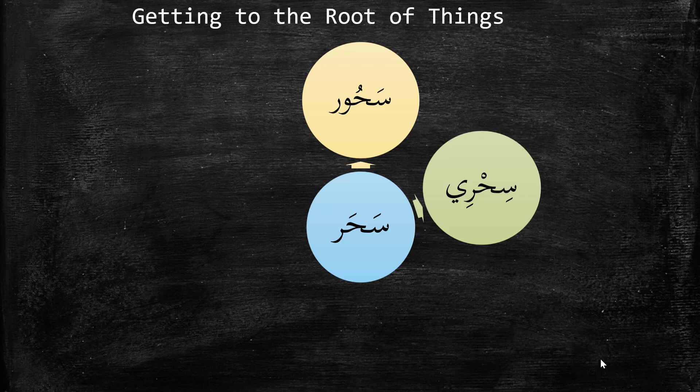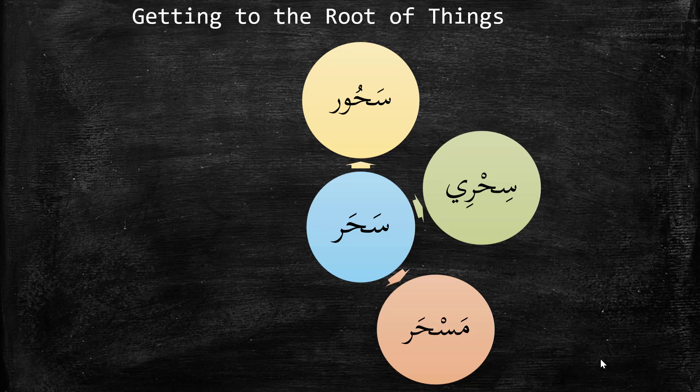Here we have 'Mashar,' and we can see the addition of a meem with a fatha. Mashar is not a word I found in the dictionary, but for those who have taken the class, we've said that meem with a fatha usually indicates a place. So if this were a word — and we're just playing around with the language here — a mashar would be a place where someone does magic or sorcery.